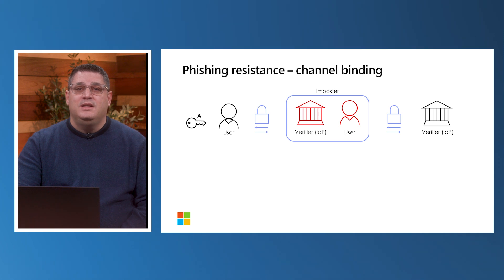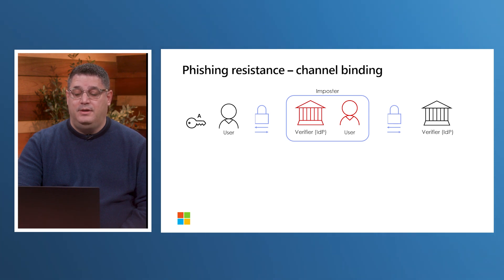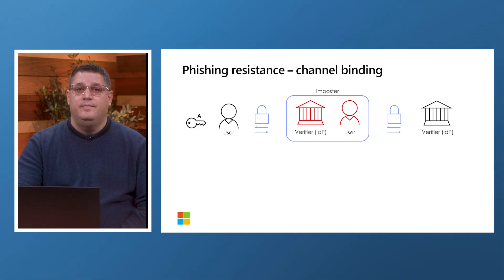Now, let's cover what makes an authentication phishing-resistant. Two methods of phishing-resistance are recognized: channel binding and verifier name binding. An authentication protocol with channel binding establishes an authenticated protected channel, such as TLS, with the verifier. It then binds a channel identifier that was negotiated in establishing this channel to the authenticator output — for example, by signing the two values together using a private key controlled by the user, for which the public key is known to the verifier. The verifier must validate the signature or other information used to prove phishing-resistance.